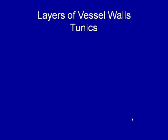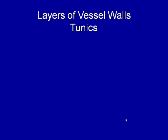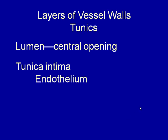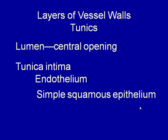The blood vessel has three major walls. The lumen is the central opening — the place where the blood flows. The most internal layer of the blood vessel is the tunica intima, a single layer of endothelium that is simple squamous epithelium whose sole function is to reduce friction, much like the endocardium of the heart reduced friction.